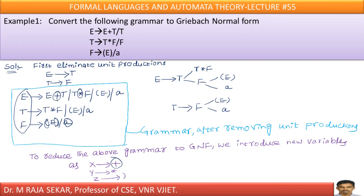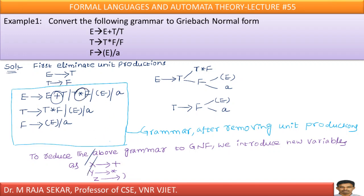Terminals cannot produce anything. You must have clarity on terminals and non-terminals. E, T, F are non-terminals. Plus, star, left parenthesis, right parenthesis, A are known as terminal symbols. Now let me introduce new productions. For plus, I am writing X goes to plus. For star, I am writing Y goes to star. For right parenthesis, I am writing Z. I need not write a production for left parenthesis, because in Greibach Normal Form all productions must be of the form capital A goes to small a alpha — the first letter must be a terminal symbol. If you have a terminal symbol in the beginning, no issue. That is why I am not giving any production for left parenthesis.